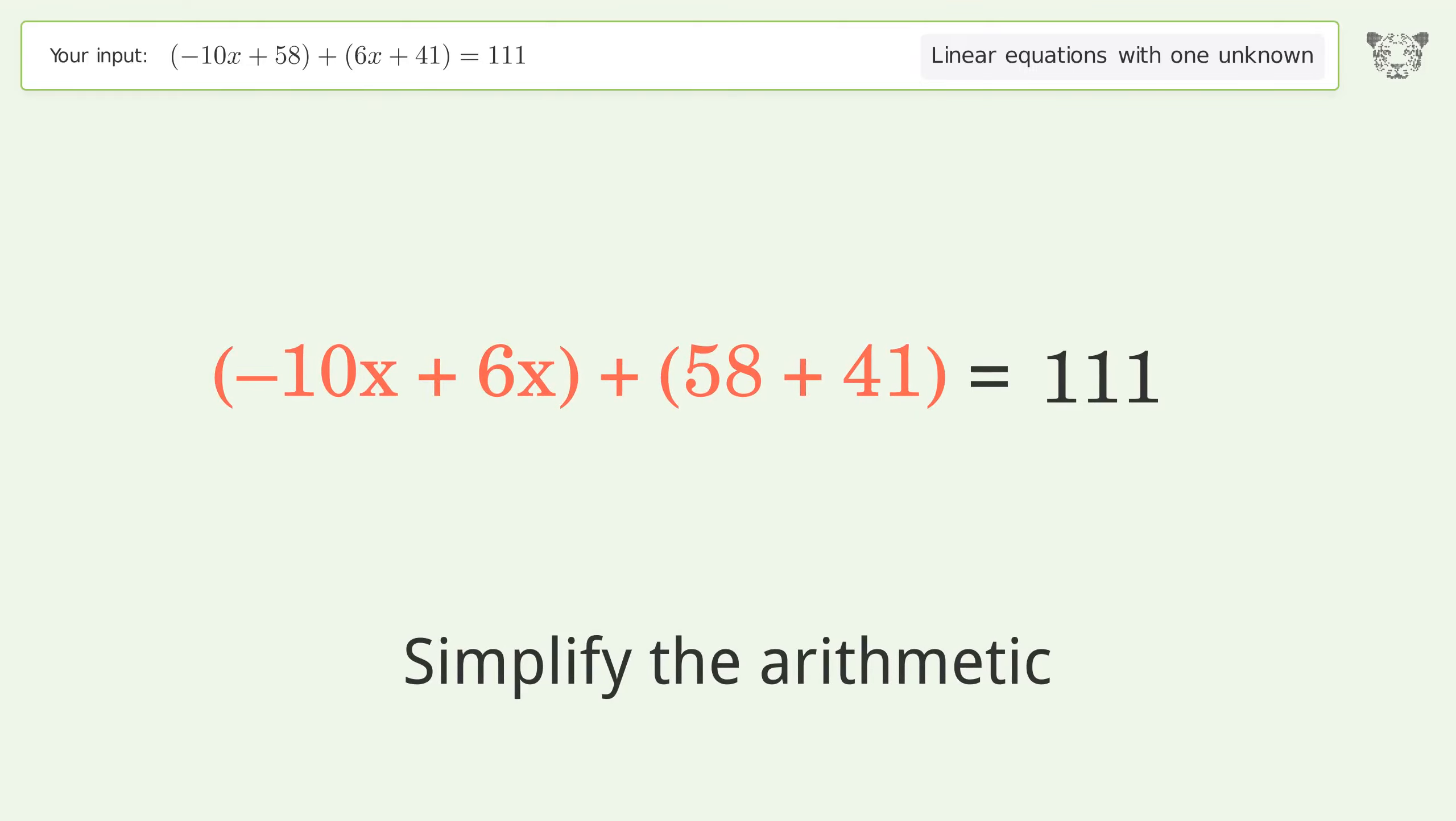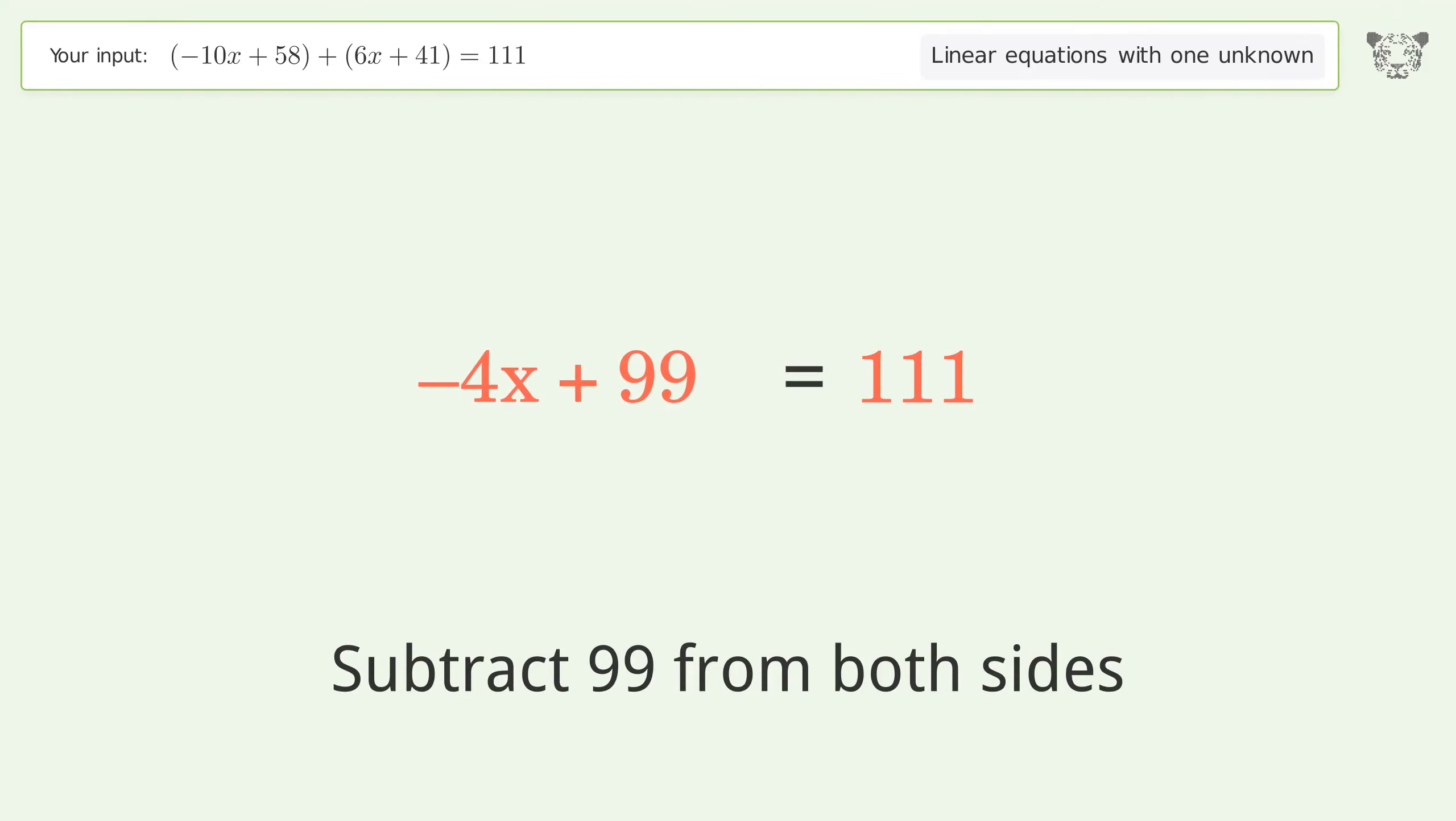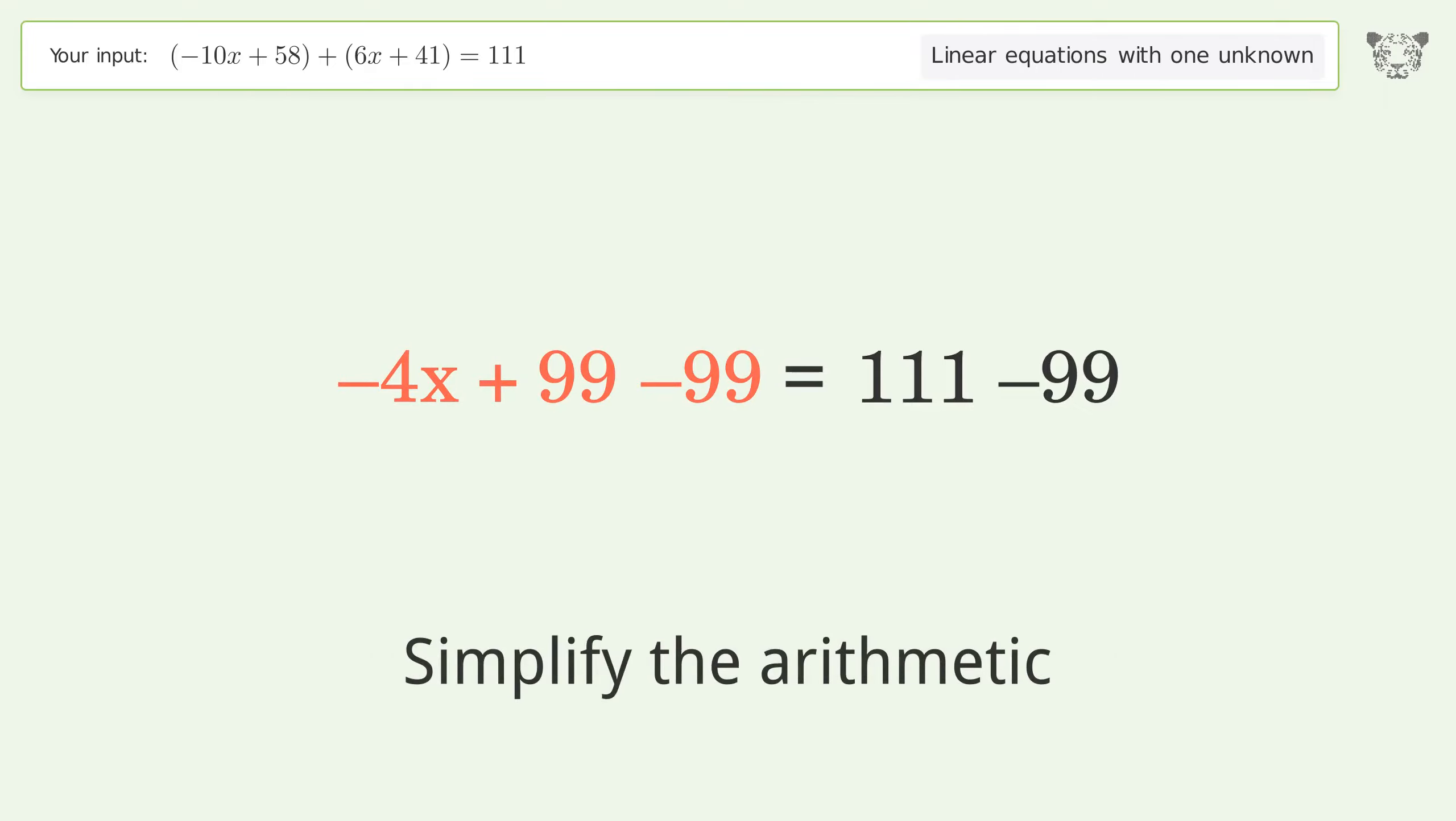Group like terms. Simplify the arithmetic. Group all constants on the right side of the equation. Subtract 99 from both sides.